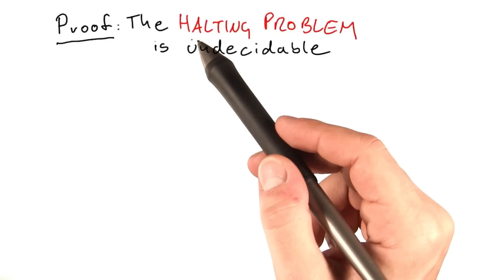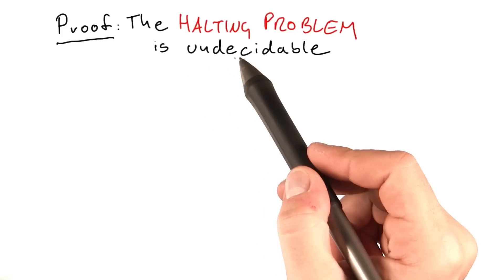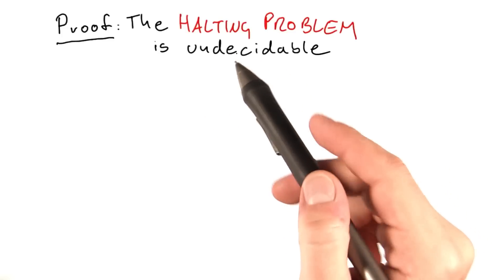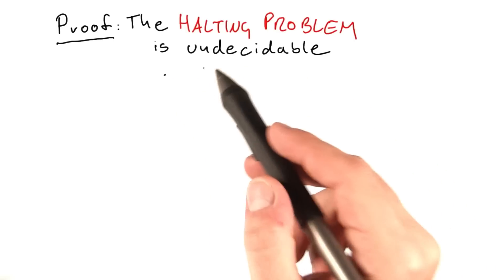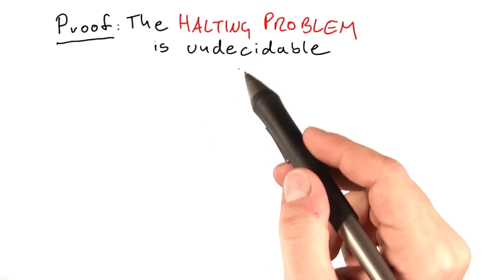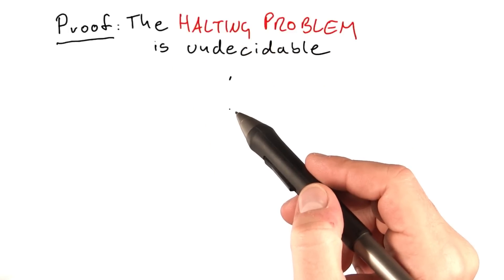The way that we're going to prove that the halting problem is undecidable is by using a technique known as a proof by contradiction, which means that I will first assume that the halting problem is in fact decidable and then show you that this assumption leads to an unresolvable contradiction.